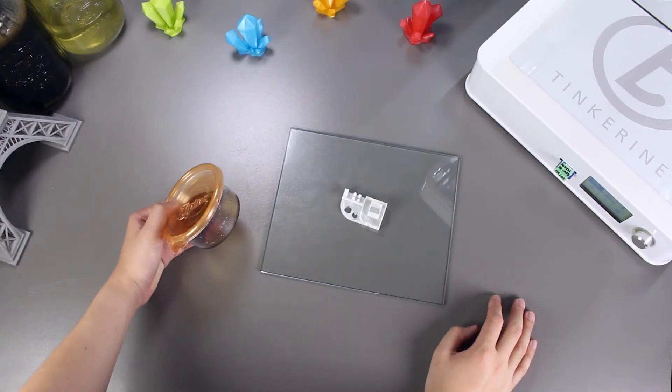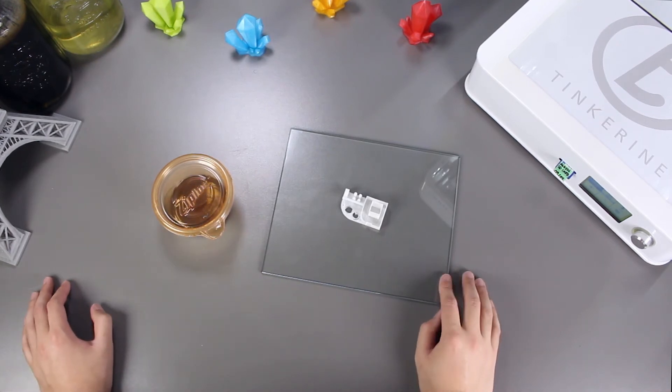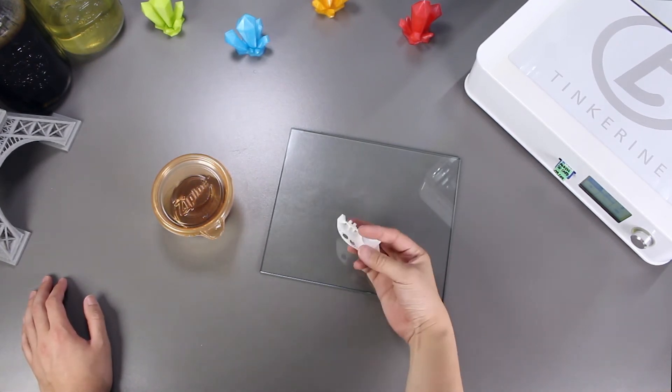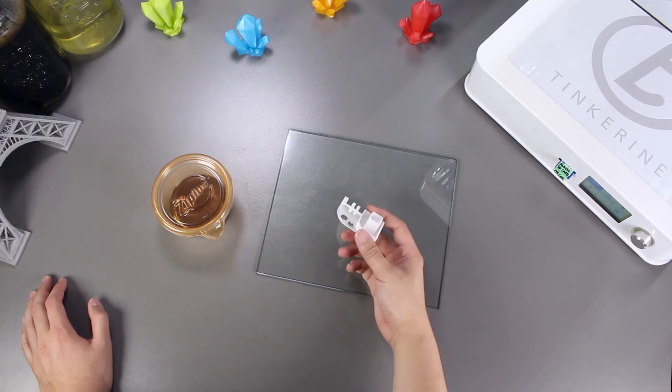Well there we have it, we tried using maple syrup and it kind of works. The first layer slipped a bit, but it still stuck on well enough that it didn't get pulled off during the print. It smells really great during the printing though.